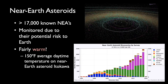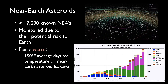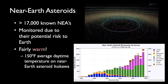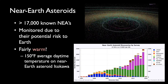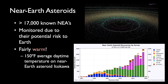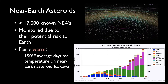Tens of thousands of asteroids have been discovered in recent years, and we are still unable to effectively detect certain sizes. There's a category called near-Earth asteroids — asteroids within a certain distance from Earth. There are about 17,000 of these, monitored due to the potential risk they pose. On the near-Earth asteroid Itokawa, the average daytime temperature is about 150 degrees Fahrenheit. The graph on the lower right shows asteroid discoveries over time, illustrating that the more we look, the more we find — so there is still more out there to be tracked and understood.